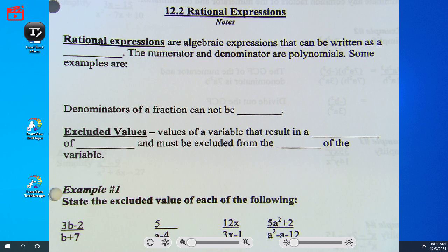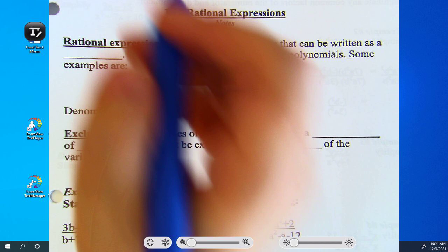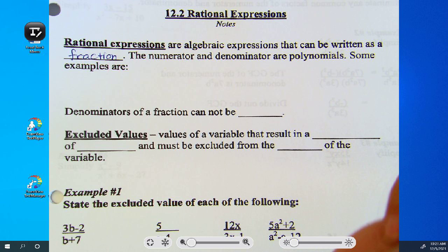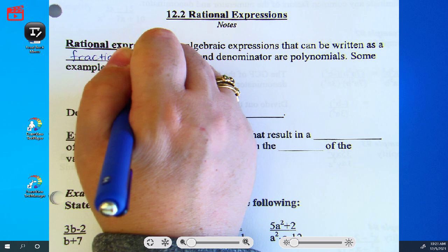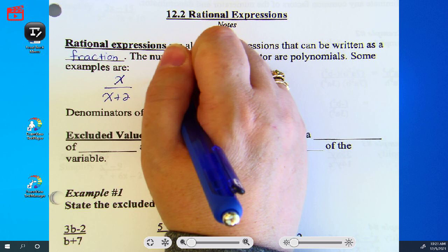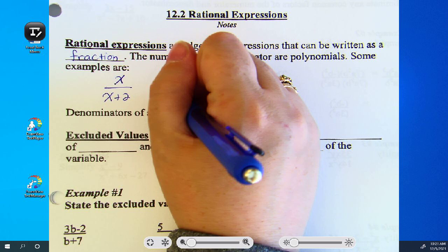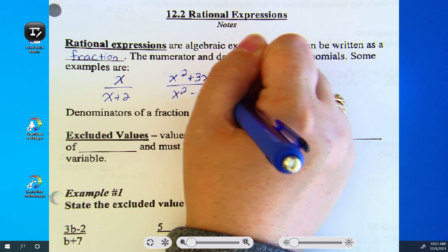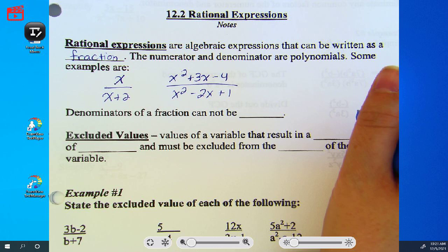All right. Rational expressions are algebraic expressions and can be written as a fraction. The numerator and denominator are polynomials. Some examples are. This is one. It's just a couple polynomials. And a fraction. That's all a rational expression is. Polynomials set up into a fraction. Pretty easy, huh?